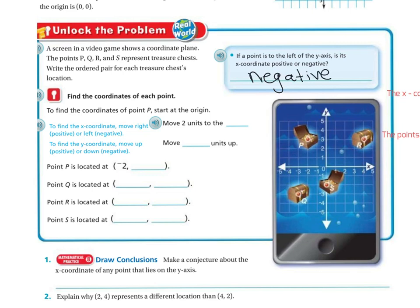To find the coordinates of point P, start at the origin. I'm going to move two units to the left, and then to get to point P, I've got to move three units up. So point P is located at negative two, three.